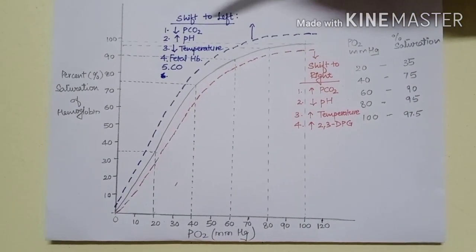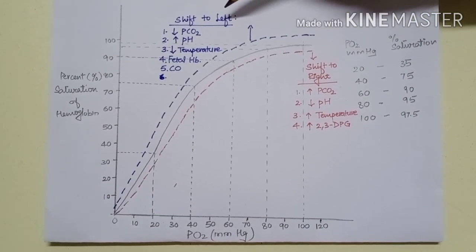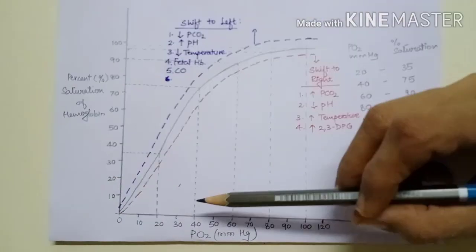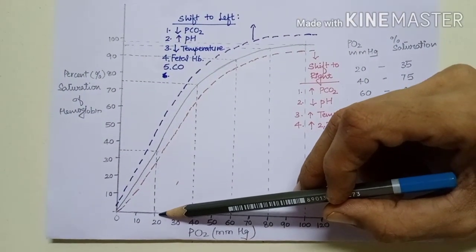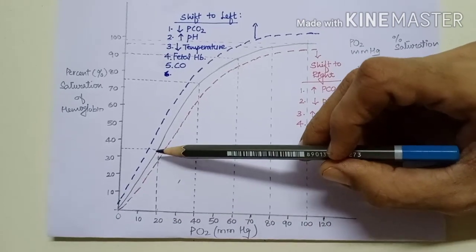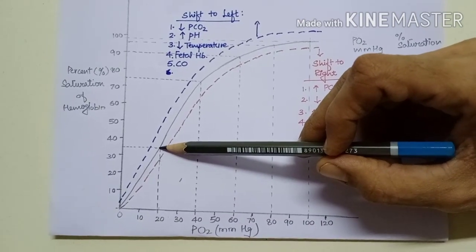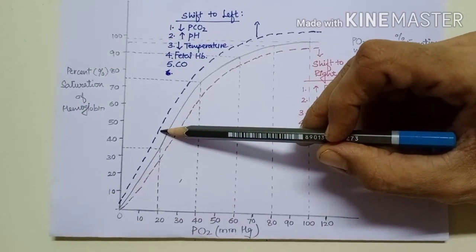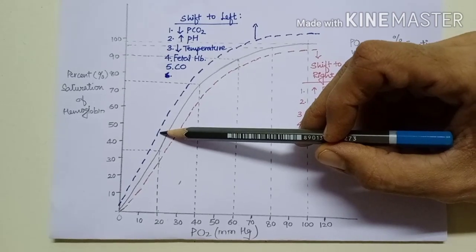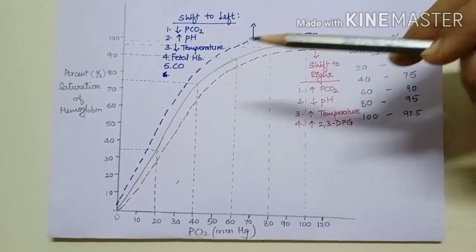Next is shift to left. It means that at the same PO2, you can see here at 20 mmHg PO2, percentage saturation is more than 35%. That means increased affinity of oxygen for hemoglobin.